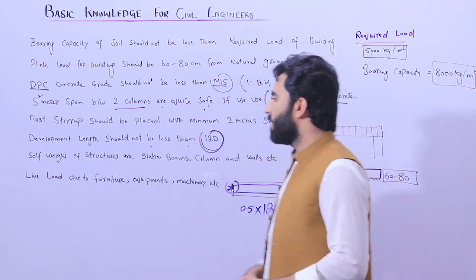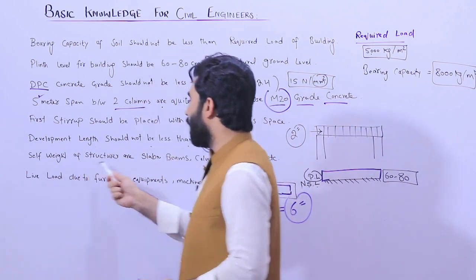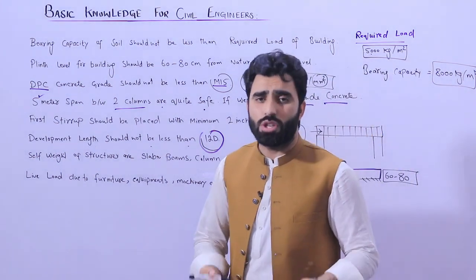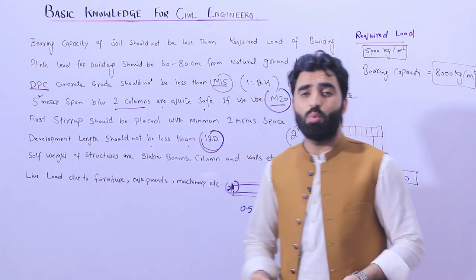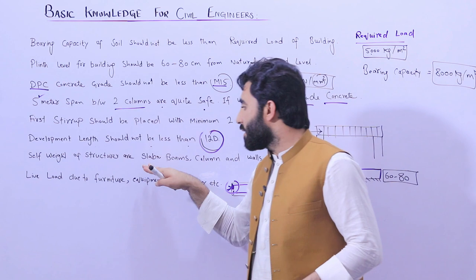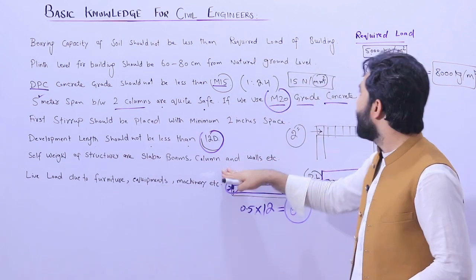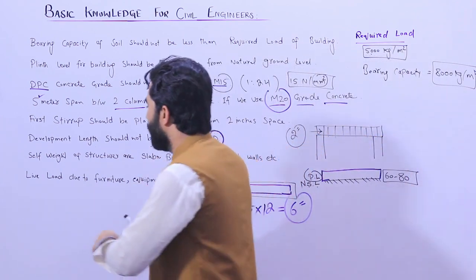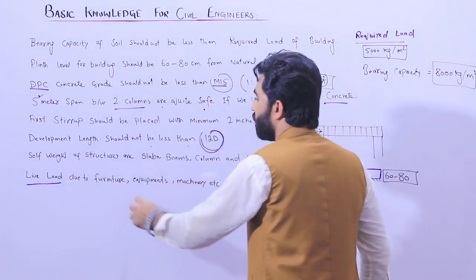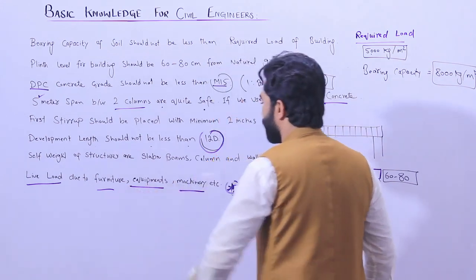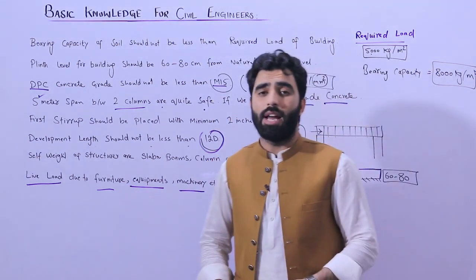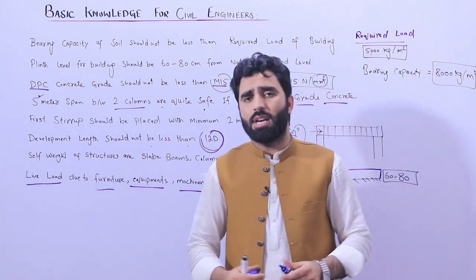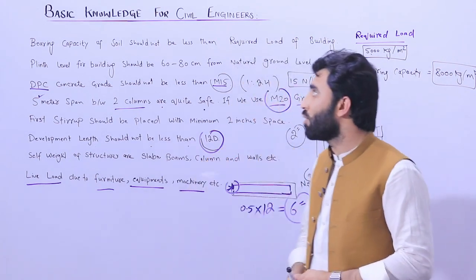The next topic is self weight of structure — slab, beams, columns, and walls. If someone asks what is the structural load or self weight of a building, it means the weight of the slab, beam, column, and building itself. This is called self weight. The other term is live load: if someone asks what is live load, it means the load due to furniture, equipment, machinery, etc. inside the building, and also the load from people moving inside or on top of the building.